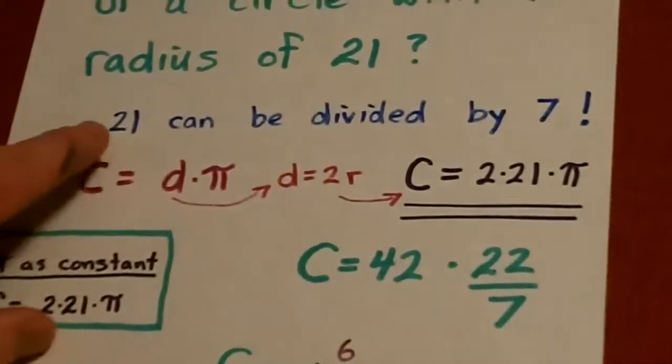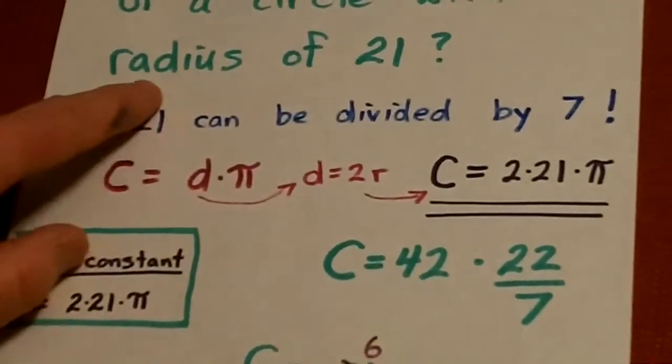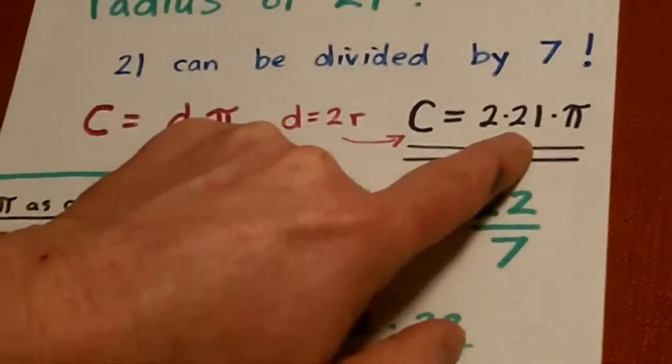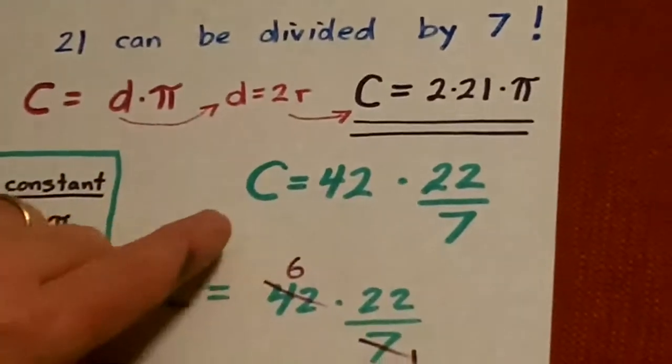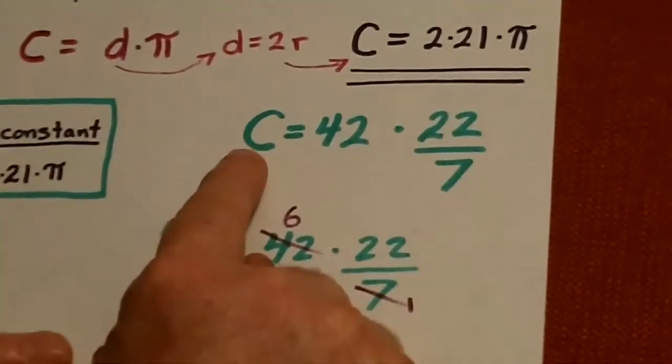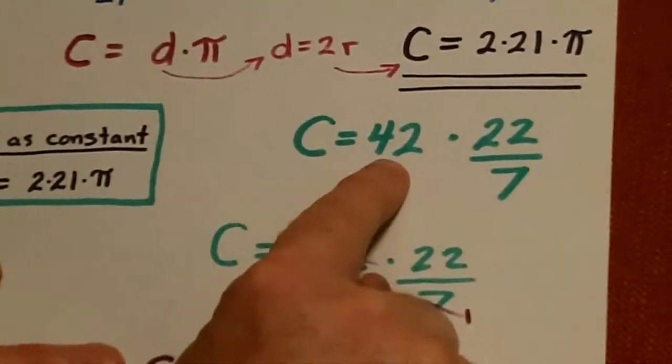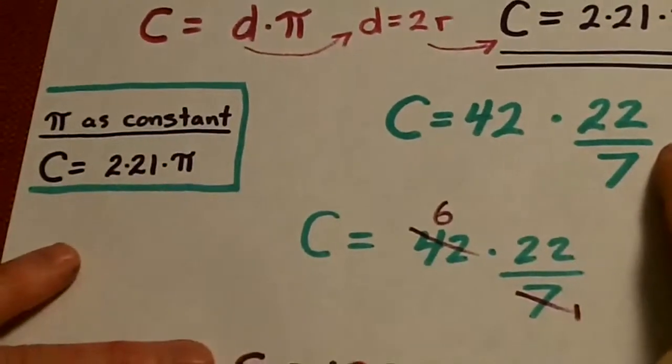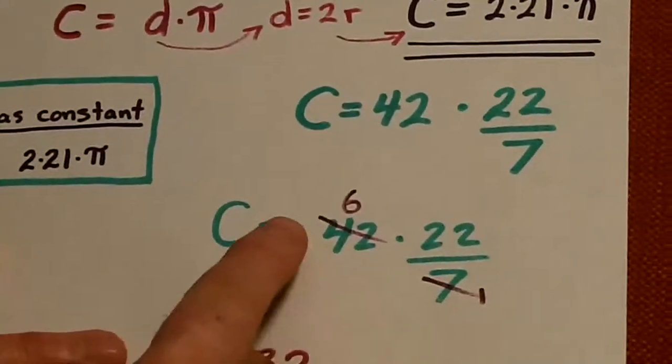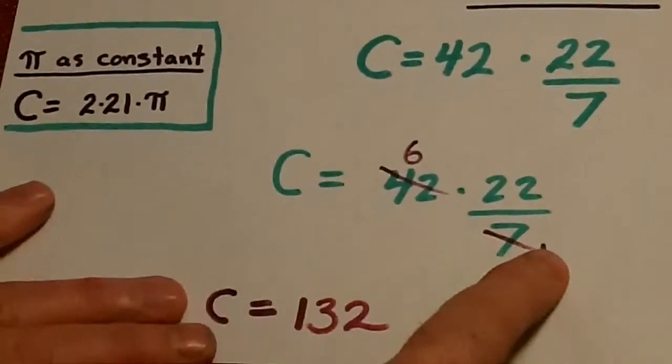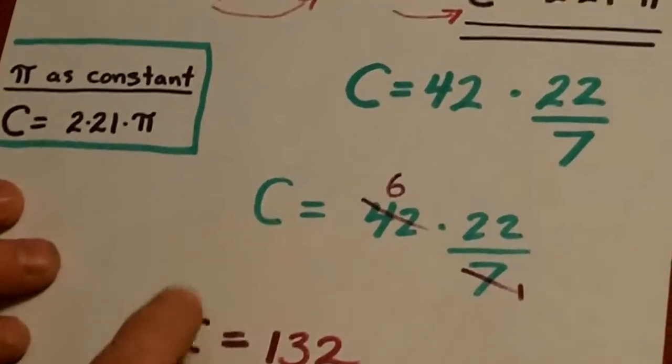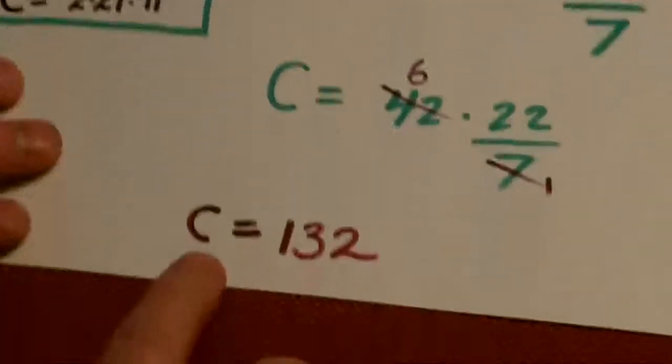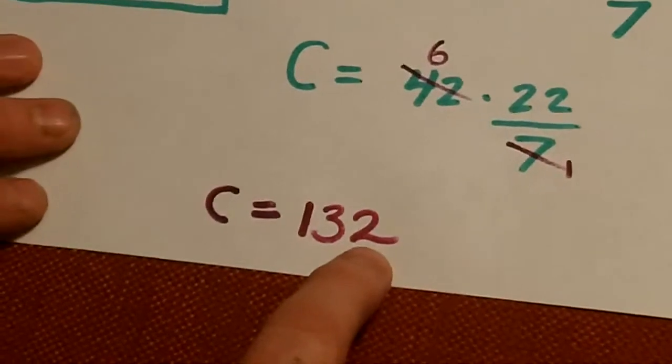So, if 21 is the radius, our diameter is 2 times 21. And so, we get the circumference is equal to 42 is the diameter. 22 over 7 is fraction pi. When we multiply those, we cross cancel. And we get the circumference is equal to 6 times 22. Or the answer is 132.